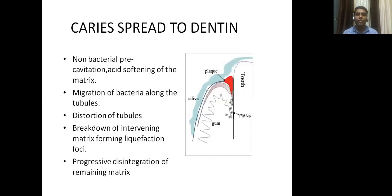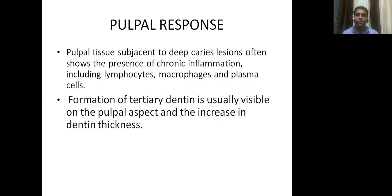When caries spread to dentin: there is no bacteria pre-cavitation, followed by non-bacterial pre-cavitation, acid softening of the matrix, migration of bacteria along tubules, distortion of tubules, breakdown of intervening matrix, forming liquefaction foci, and progressive disintegration of the remaining matrix. Pulp response: pulp tissue subjacent to deep caries lesion often shows the presence of chronic inflammation, including lymphocytes, macrophages, and plasma cells. Formation of tertiary dentin is usually visible on pulpal aspects, increasing dentin thickness.